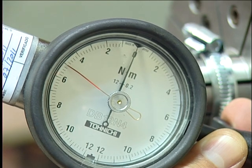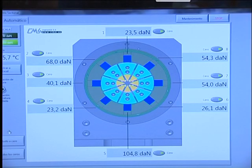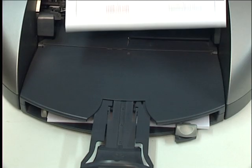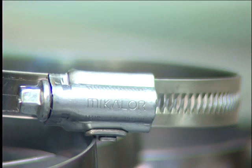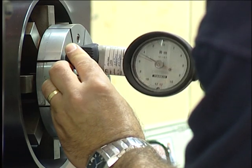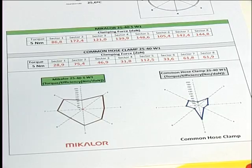Sensors in each sector send the values obtained to a central computer which then presents the information in a graphic format, comparing the performance of the Mikalor clamp against the standard hose clip.